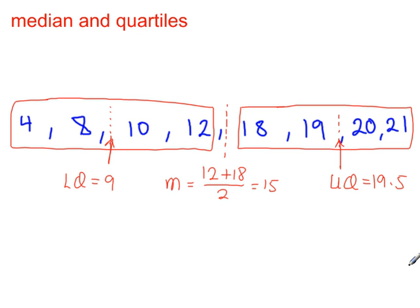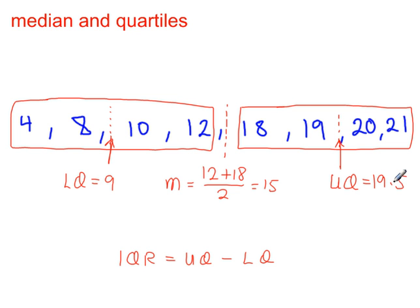If you're looking for the interquartile range, it is always the upper quartile minus the lower quartile. So it will be 19.5 minus 9.